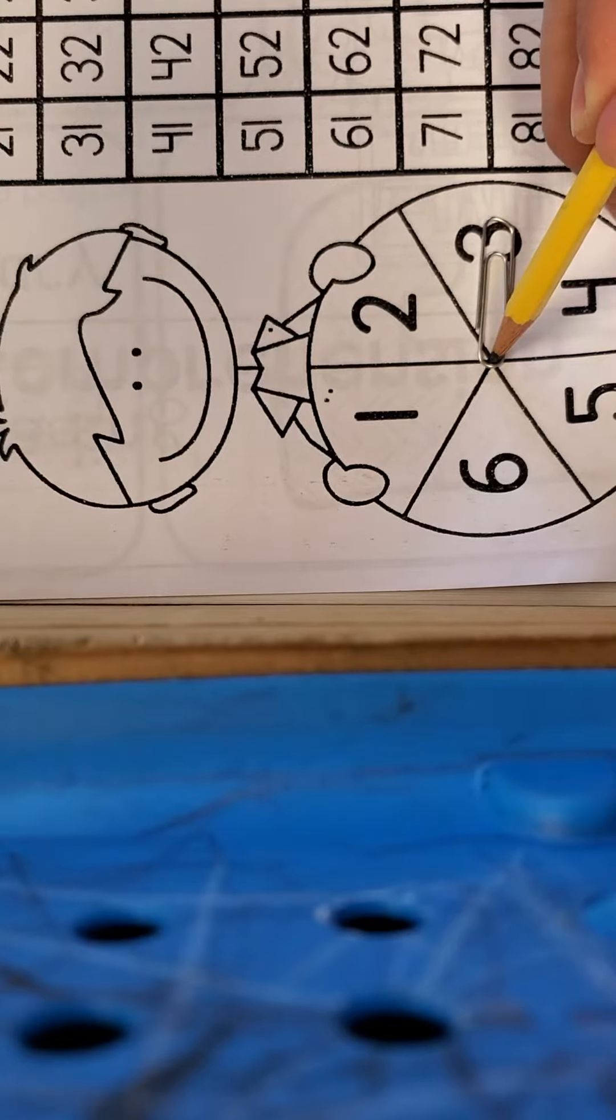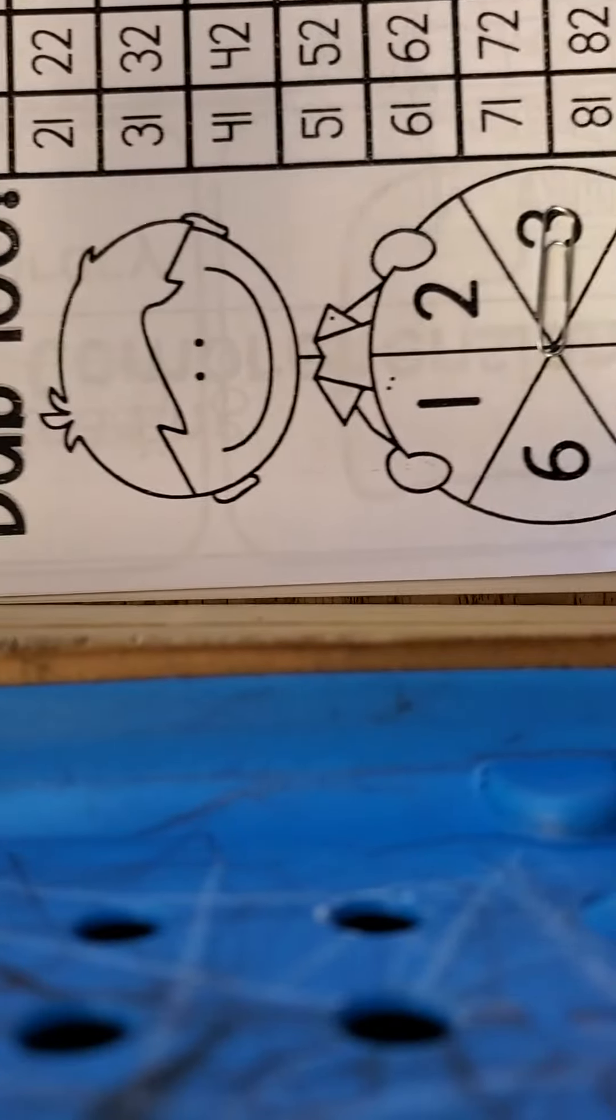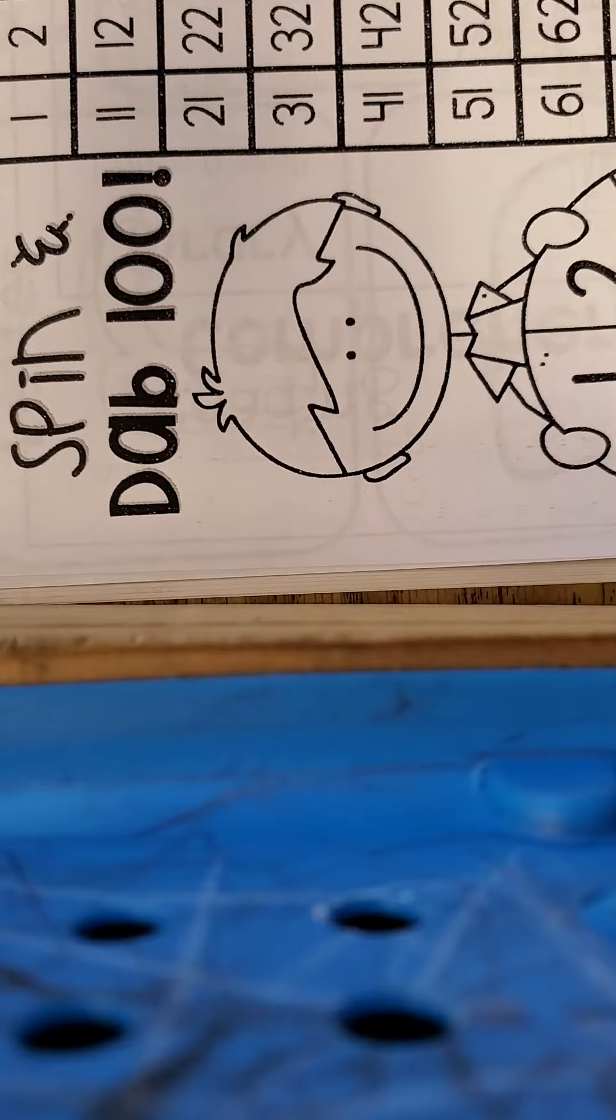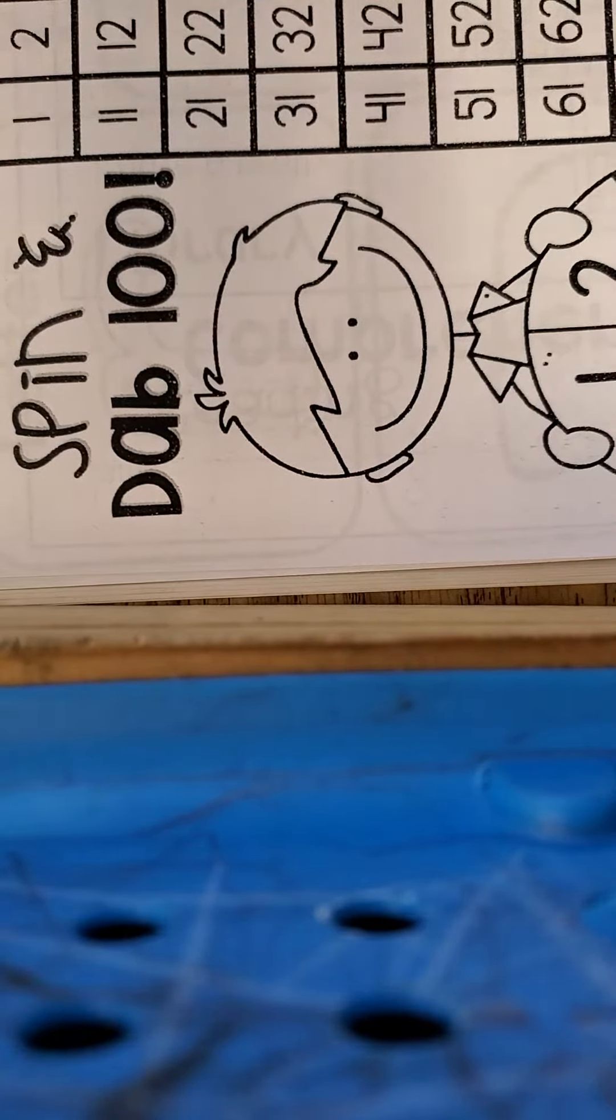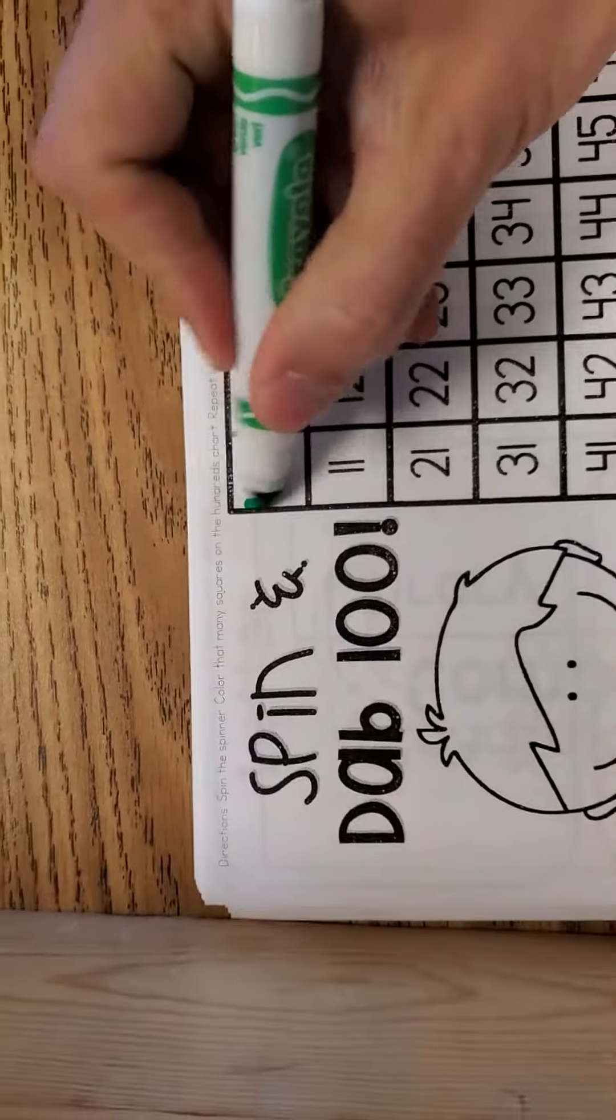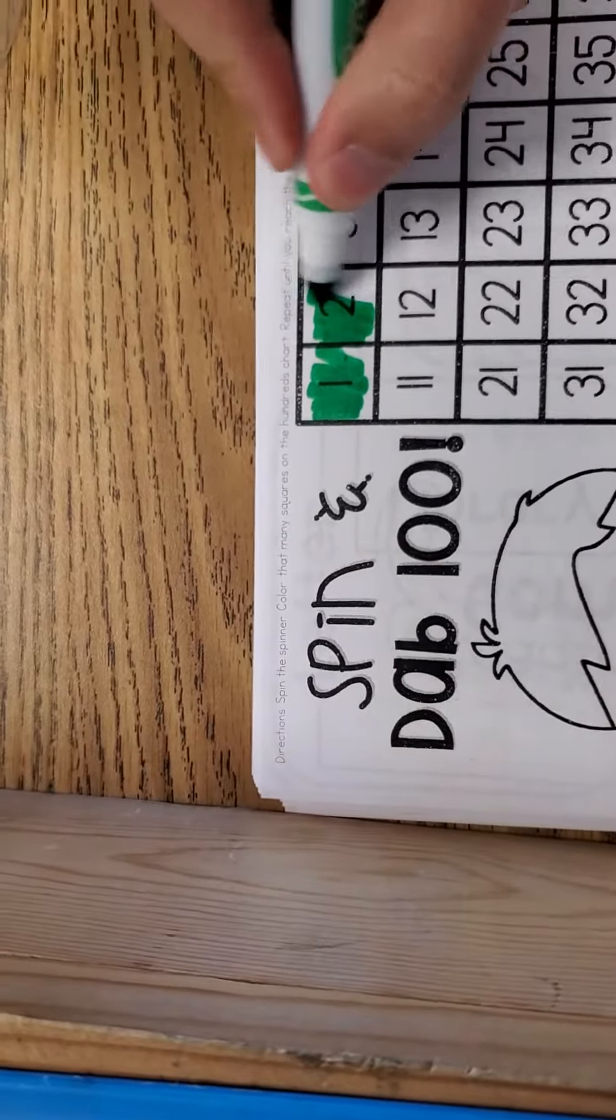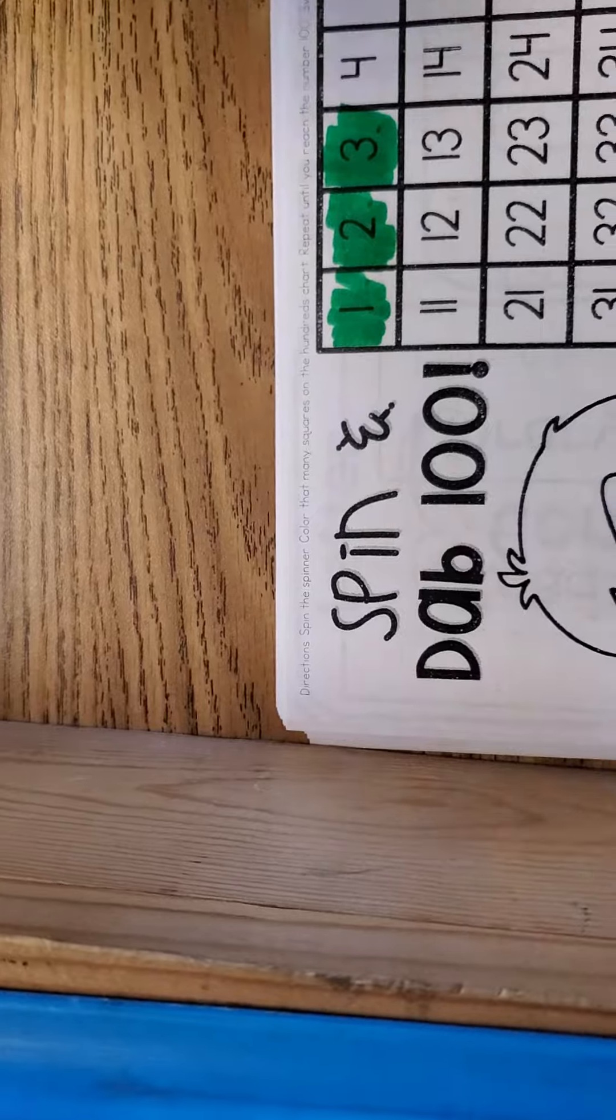...that's how many squares you need to color. So I landed on three, so I'm going to take my marker or crayon and I'm going to color three numbers like this: one, two, three. Alright, then I'm going...